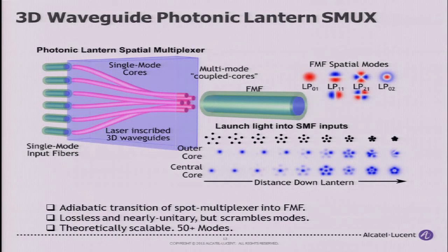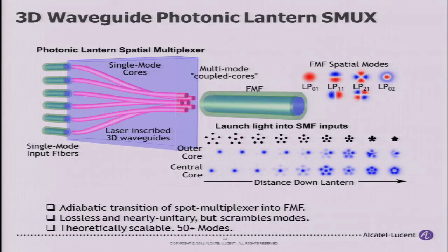If you're going to design fibers with strong coupling anyway, it doesn't make much sense to try to excite each mode individually. You can excite orthogonal combinations of modes, and since you have MIMO processing at the receiver, you can undo all the scrambling and recover your information. This type of multiplexer is called a photonic lantern spatial multiplexer — a similar device exists in astronomy. On one side you have single-mode fibers; on the other side, a multi-core waveguide whose modes approximate the few-mode fiber modes, with an adiabatic transition between them.